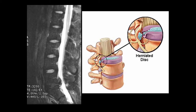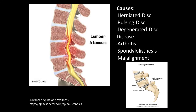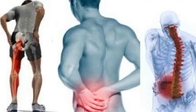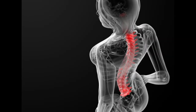Bulging discs may also place pressure on nearby nerves, leading to serious discomfort and in some cases severe and chronic pain. Muscle spasms and lower back pain may be evidence of a bulging disc in the lumbar region, as this area holds approximately 90% of the upper body's weight, and 90% of all bulging discs occur there. When a bulging disc pressures the sciatic nerve, sciatica can result — typically manifesting as pain down one leg. Pain or tingling in the neck, shoulders, arms, hands, or fingers can signal a bulging disc in the cervical region.